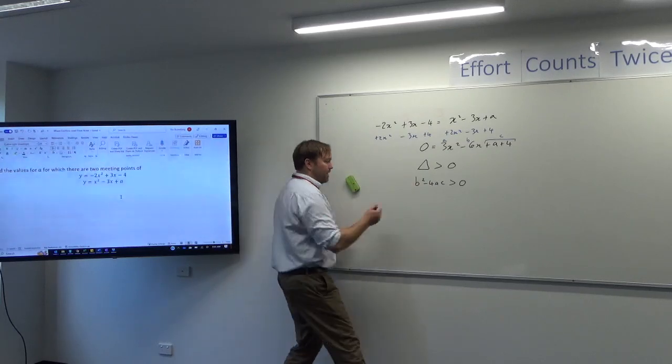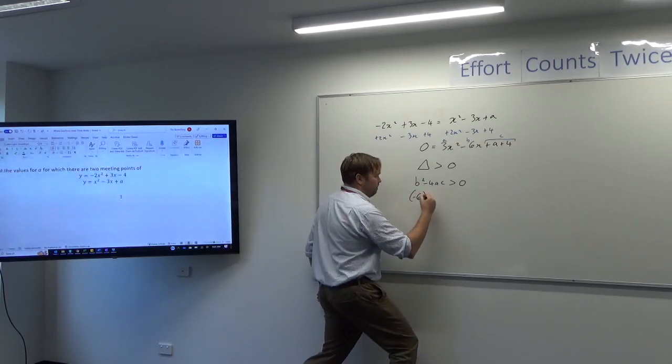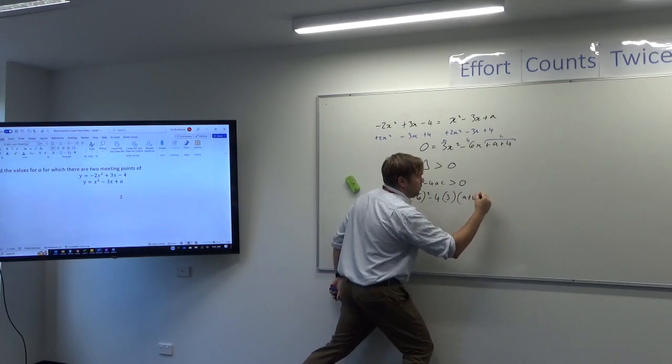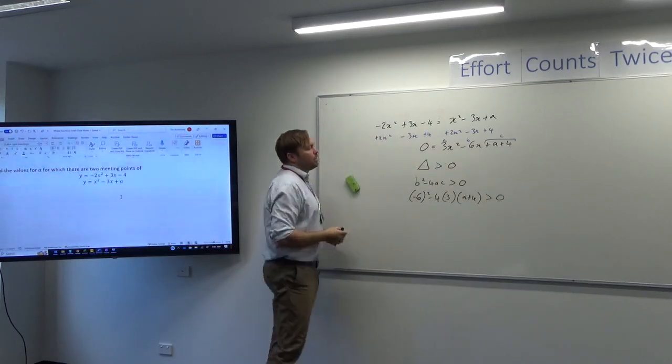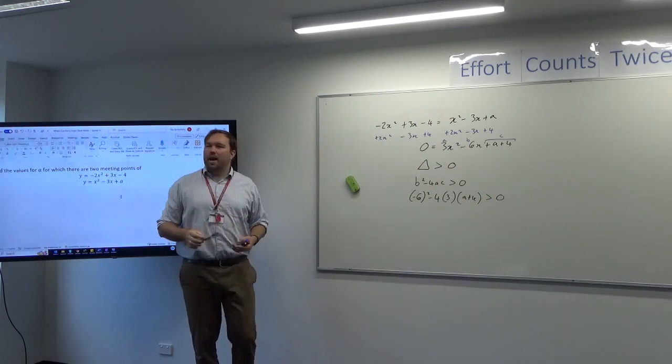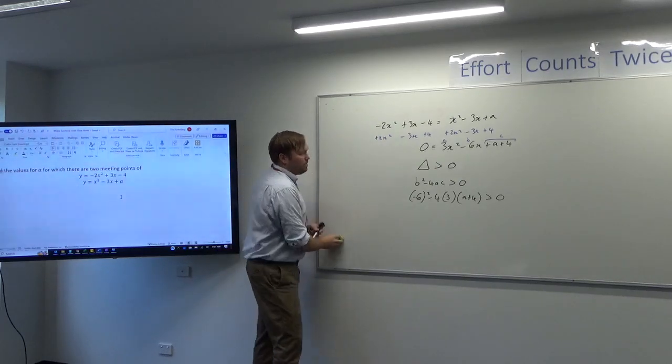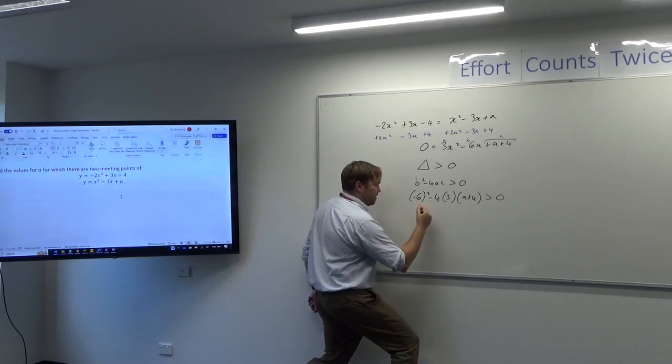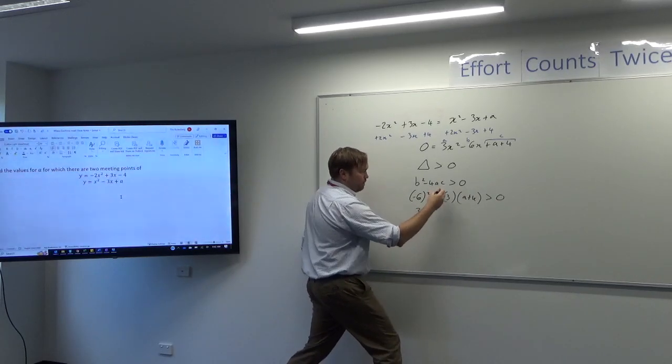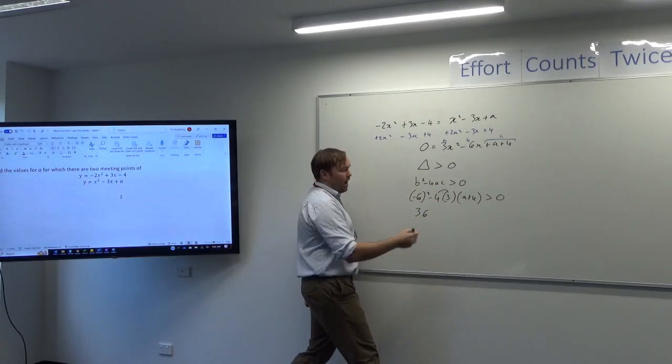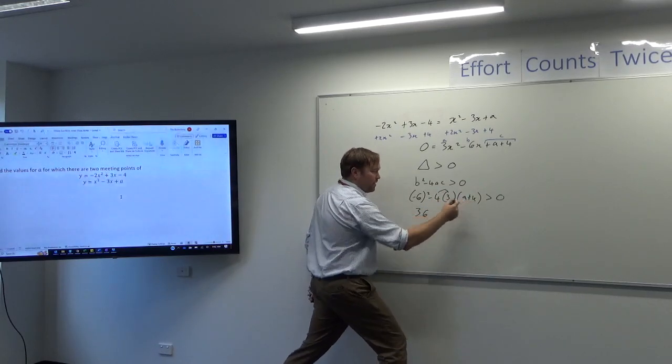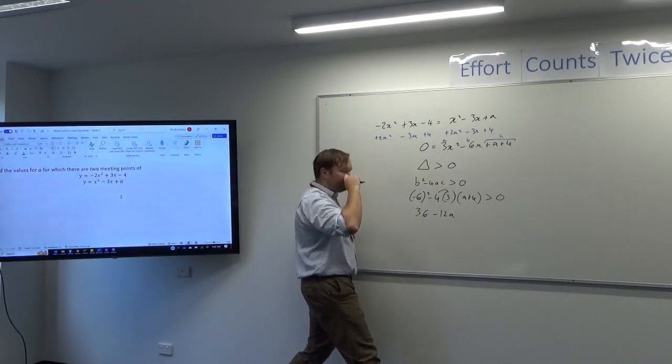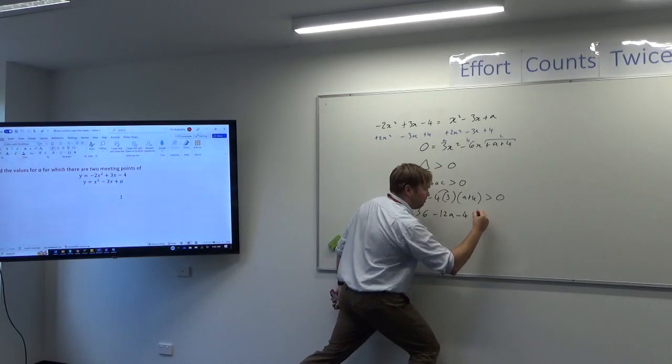B squared. So that is minus 6 squared minus 4 bracket 3 bracket bracket a plus 4 is greater than zero. And then we solve. So to solve, I mean we're aiming to get A by itself. So I would expand this out. Minus 6 squared is 36. This is really minus 12. And that minus 12 goes into there and there. So minus 12a minus 12 times 4 minus 48. This is going to be zero.